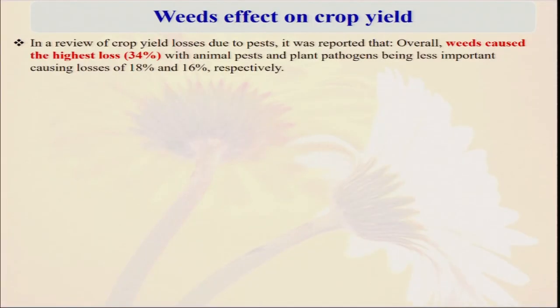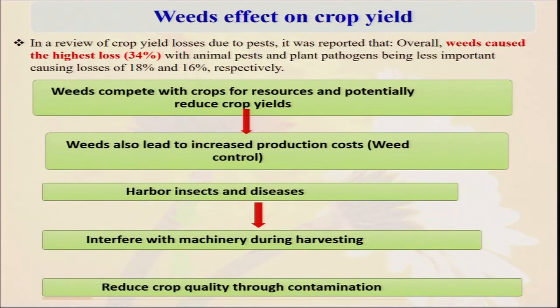Regarding climate change implications — most of these problematic weeds are C4 plants. With increasing CO2 and temperature, C4 plants may have advantage, and it is projected that weeds will be more dominant compared to our crops. Weeds affect crop yield about 34 to 37 percent. Weeds compete with crops for resources and reduce crop yields. They also increase the production cost — you need labor, mechanical weeders, and in inorganic farming you need herbicides. So not only are they reducing crop yield, they are also increasing the cost of production. By two ways it is reducing our total profit: first, yield is less; second, cost of production is higher.